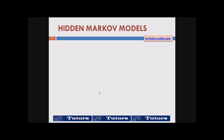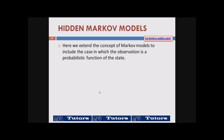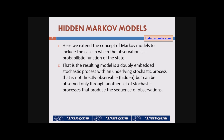We are going to look at something much more elaborate called hidden Markov models. Here we extend the concept of Markov models to include the case in which the observation is a probabilistic function of the state. The resulting model is a doubly embedded stochastic process with an underlying stochastic process that is not directly observable — hidden — but can be observed only through another set of stochastic processes that produce the sequence of observations.